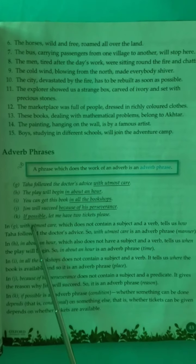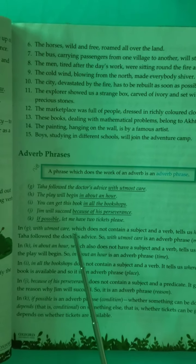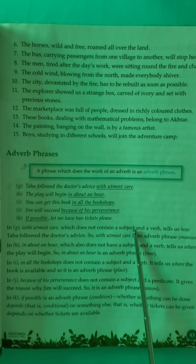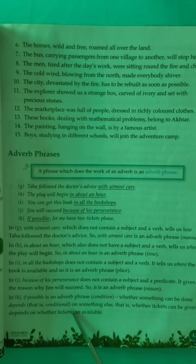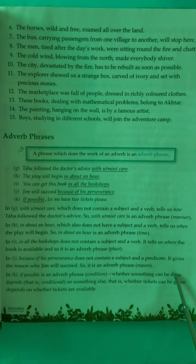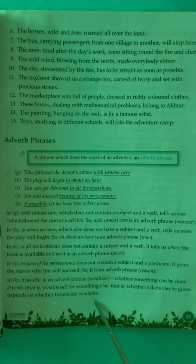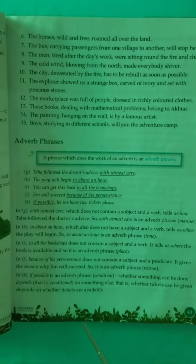And in the last sentence K: 'If possible, let me have two tickets, please.' 'If possible' is an adverb phrase. Whether something can be done is conditional — because the sentence starts with the word 'if.' So it is an adverb phrase that is conditional on something else; that is, whether tickets can be given depends on whether tickets are available — subject to their availability.